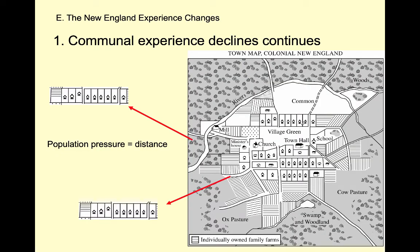As New England towns grew and became more prosperous, the communal experience declined. Under primogeniture, only the oldest son inherits the father's farm. The second and third born sons are landless laborers who must move west to create new towns if they want any land or wealth. This westward expansion is one cause of King Philip's War, as more people moving west ran into Native Americans who didn't want to give up their land. The wealth gap increased and the colony kept spreading west.